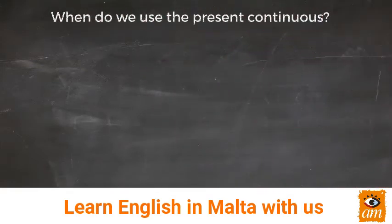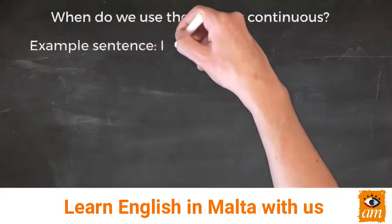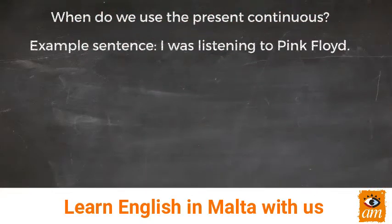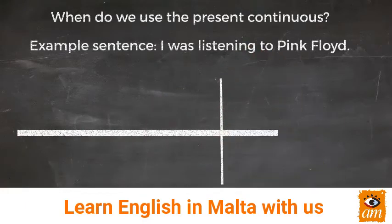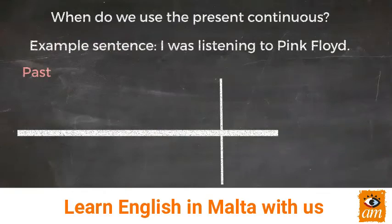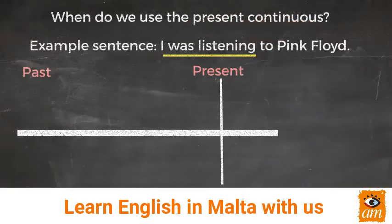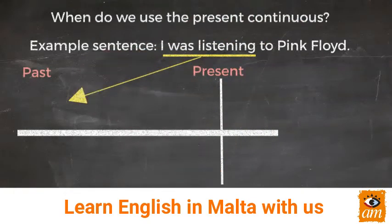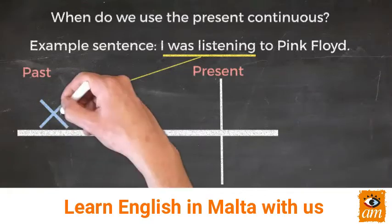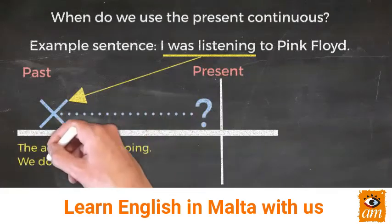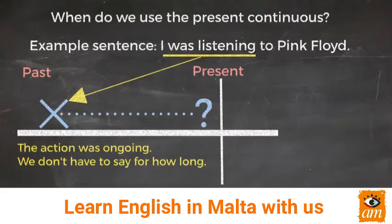So when do we use the past continuous? The example sentence: I was listening to Pink Floyd. We have our timeline over here — on the left we've got the past and the line down the middle is the present. 'I was listening' is the action happening, so the cross tells us this action is in the past and it was happening for a period of time. We don't need to say how long the action went on for — all we know is that the action happened in the past and it continued for a period of time.